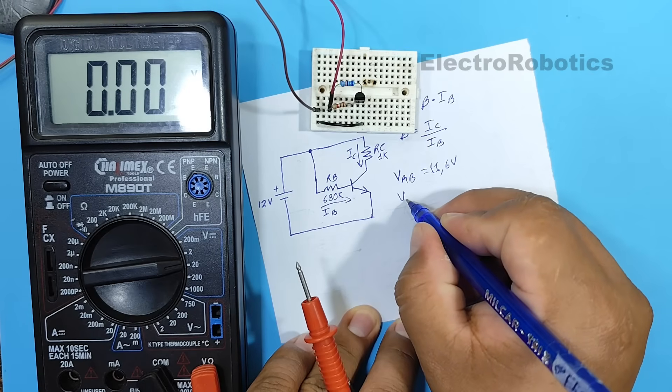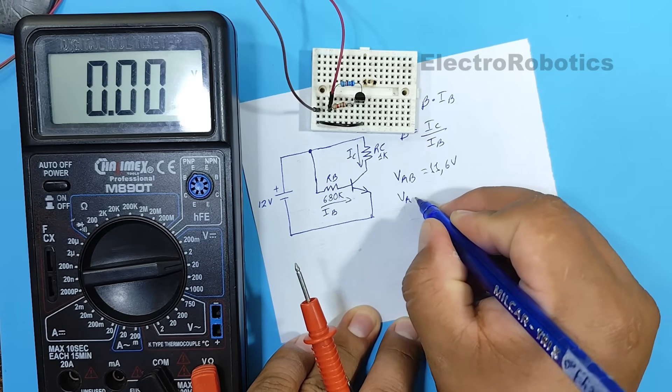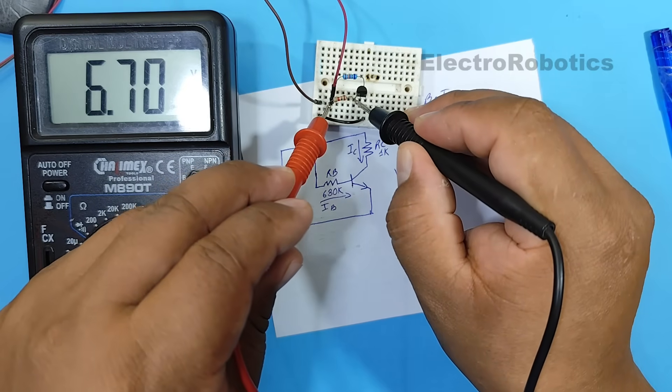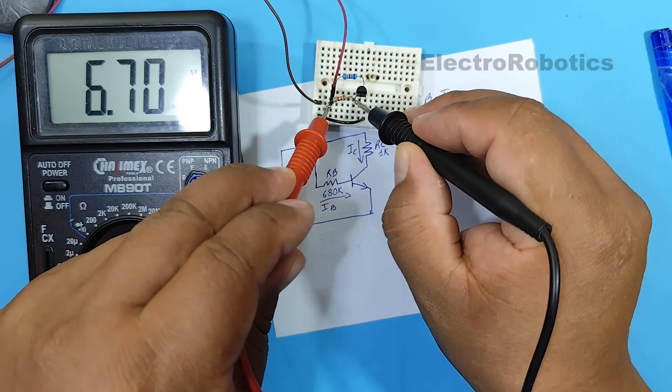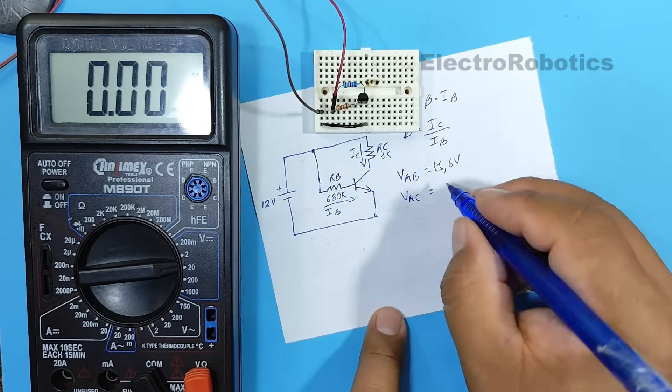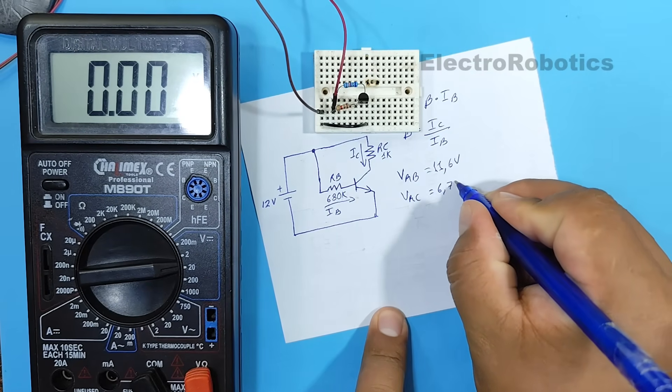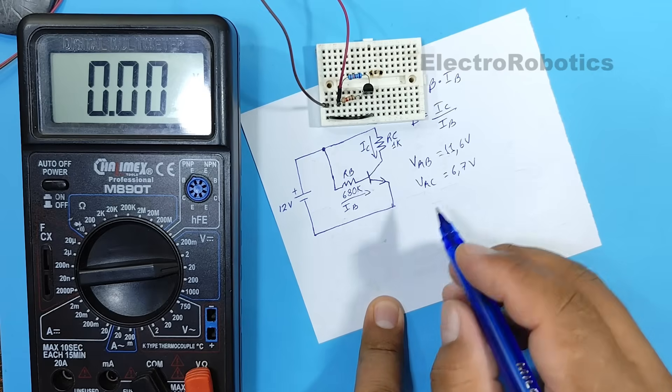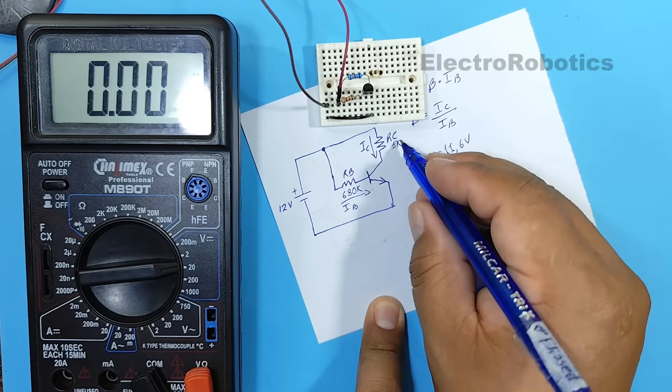Now, the voltage across the collector resistor. It would be 6.7 volts. With this, we can calculate the current from both the base and the collector.